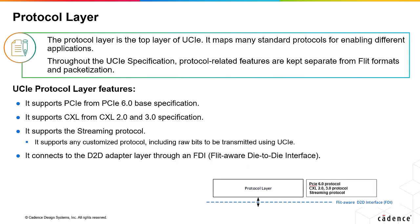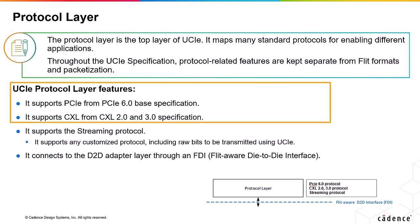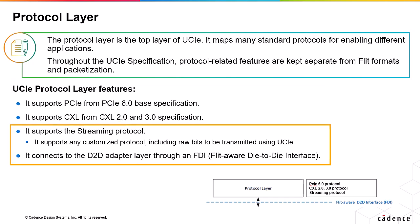This slide describes the protocol layer of UCIE. The protocol layer is the top layer of UCIE, which maps many standard protocols for enabling different applications. Throughout the UCIE specification, protocol-related features are kept separate from FLIT formats and packetization to support multiple standard protocols. The protocol layer supports PCIe 6.0 base specifications and CXL 2.0 and 3.0 specifications. It also supports a streaming protocol which can contain any customized user protocol, including raw bits through UCIE. A streaming protocol can also be used to embed any standard protocol, and it connects to the D2D adapter layer through a FLIT-aware die-to-die interface.